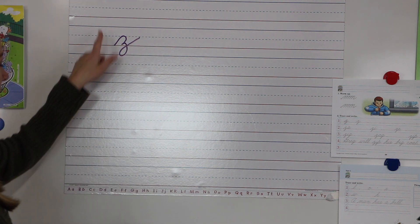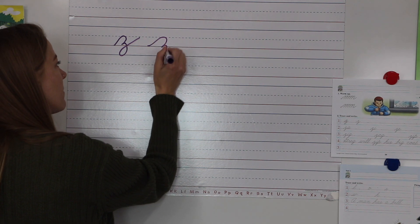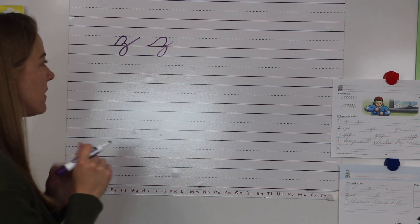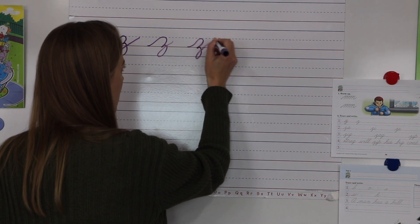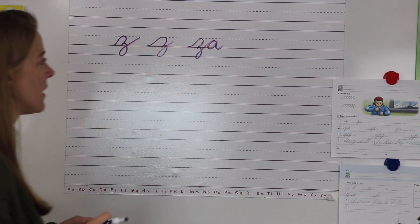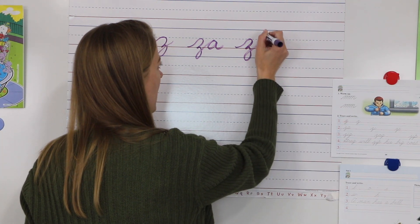Then you're gonna do a Z with an A, and then a Z with an I. This is just to help you practice free flow with your cursive.